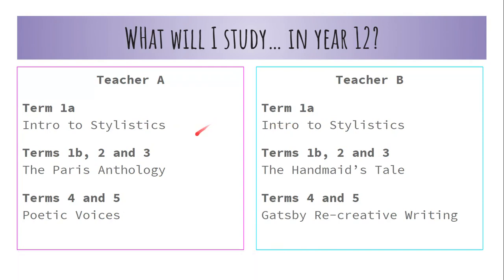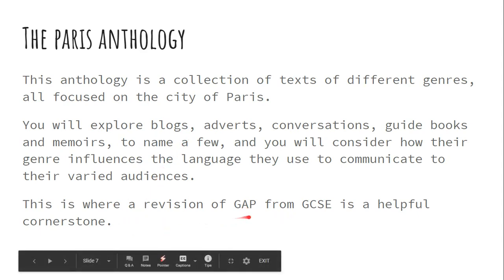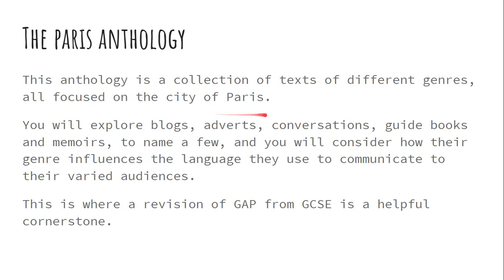Once you've done the introduction to stylistics, you move on with Teacher A to study the Paris Anthology — a collection of different texts all about Paris. Examples include blogs, adverts, conversations, guidebooks and memoirs, among others. You'll be considering how the genre of writing influences the language used to communicate to varied audiences — how language differs because one person is writing in the blog genre and another in the adverts genre. The revision of genre, audience and purpose from GCSE will be a really helpful cornerstone, and this anthology really allows you to see language as totally open to manipulation and change depending on who you are communicating with.